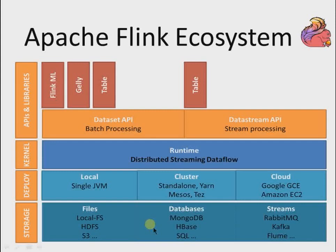The third component of the Apache Flink ecosystem is the Kernel — this is the core of Apache Flink. It supports distributed streaming data flow and this layer provides distributed processing, fault tolerance, reliability, native iterative processing capability, and more.